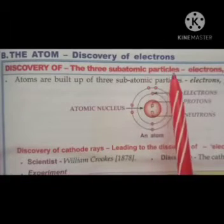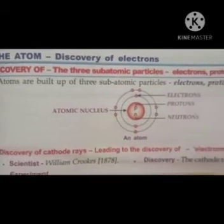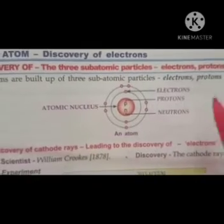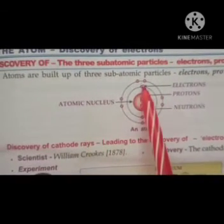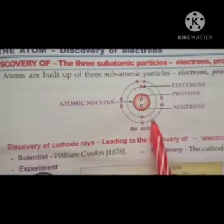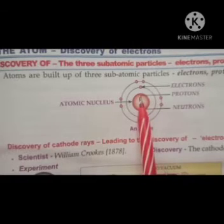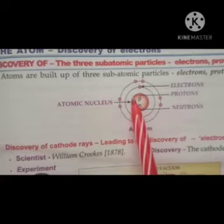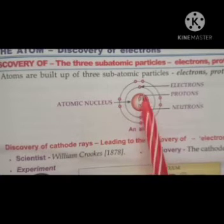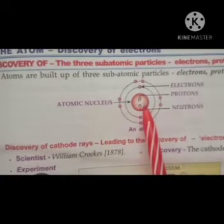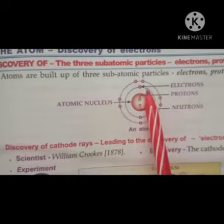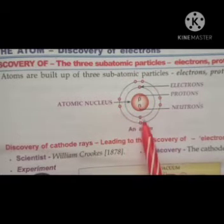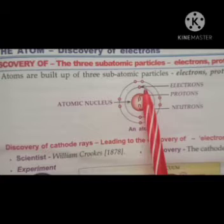Now the discovery of three subatomic particles — that is electrons, protons, and neutrons — how they are discovered. All of you know that an atom is built up of three subatomic particles: electron, proton, and neutron. Protons and neutrons are present in the center of an atom, which is called the nucleus, and electrons revolve around the nucleus in different shells.